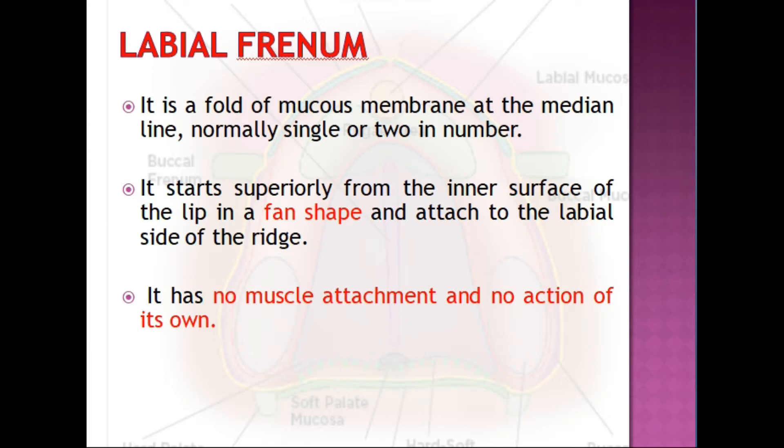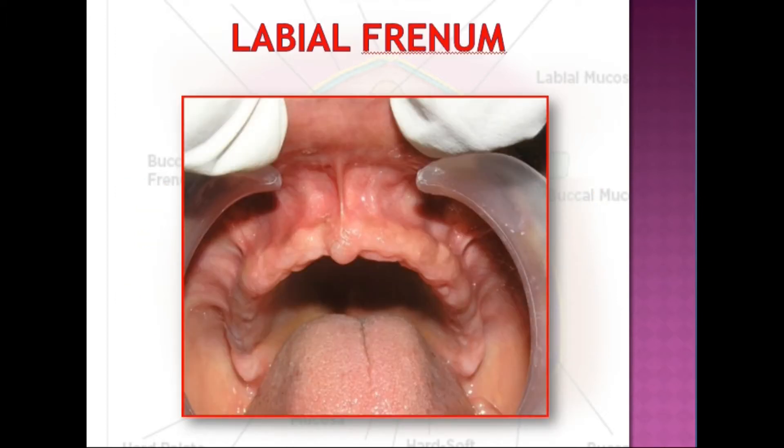The labial frenum has no muscle attachment of its own and therefore no action of its own. It corresponds to the midline of the face and can be noted during teeth setting and denture delivery. If this frenum is very prominent, the denture will get dislodged easily during functional movements of the lip, especially pursing of the lip.